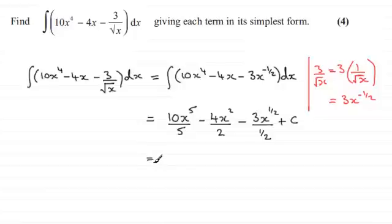Now we need to simplify each term. And what I notice is that for this term here, the 5 goes into the 10 twice. And for the second term, 2 goes into the 4 twice. And we'll tackle the last term in a moment. So what we've got here is 2x to the power 5 minus 2x squared then. And then we've got 3 divided by a half, which is 6. So you've got minus 6x to the power half plus c.